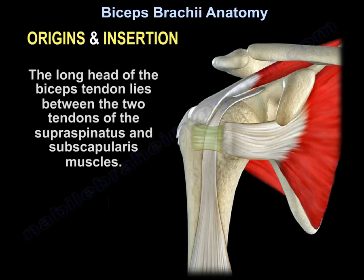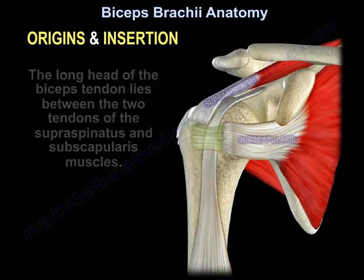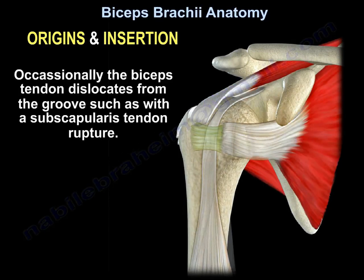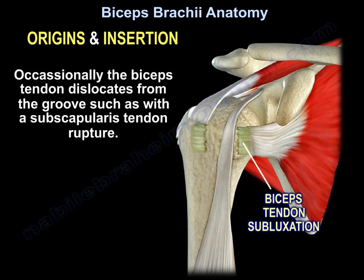The long head of the biceps tendon lies between the two tendons of the supraspinatus and subscapularis muscles. Occasionally, the biceps tendon dislocates from the groove, such as with subscapularis tendon rupture.